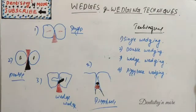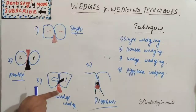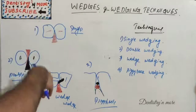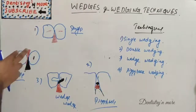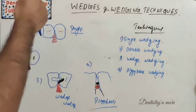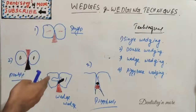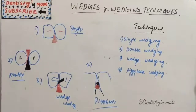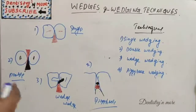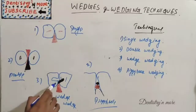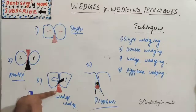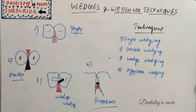The third technique is wedge-wedging, where again two wedges are used. The first wedge is inserted from the lingual embrasure, while the second one is inserted between the wedge and the matrix band at a right angle. It is used in the maxillary first premolar because of the presence of furcation roots near the gingival area, requiring the second wedge at right angle between the matrix band and the first wedge.